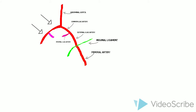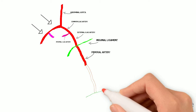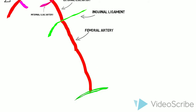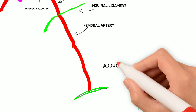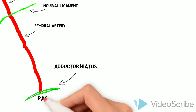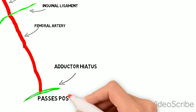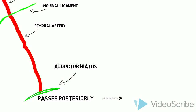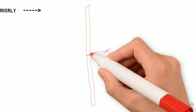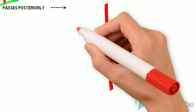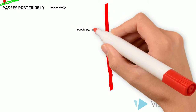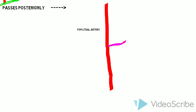The femoral artery continues down the leg until it hits the adductor hiatus, which is a passage through the adductor magnus muscle for it to pass, and it passes posteriorly to the posterior side of the leg. Once it passes through the adductor hiatus, it becomes the popliteal artery.